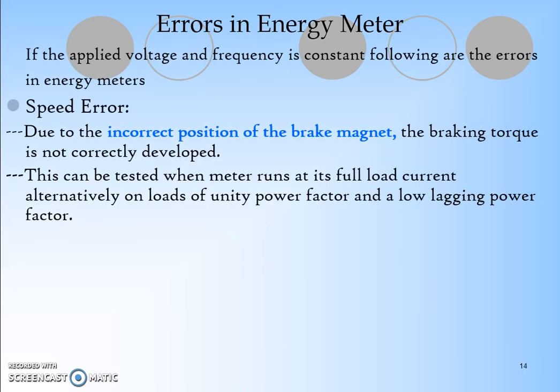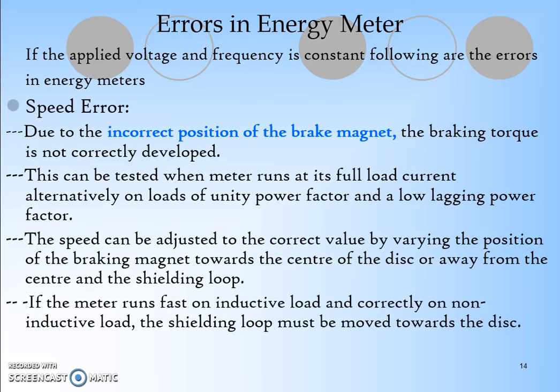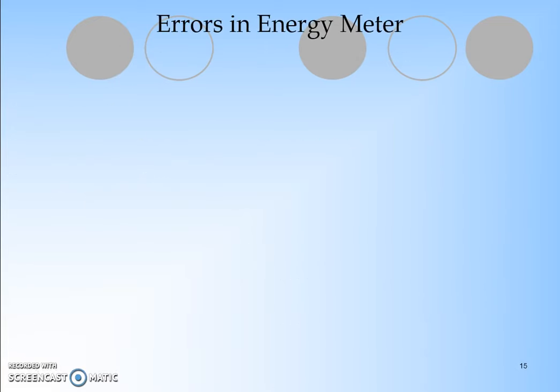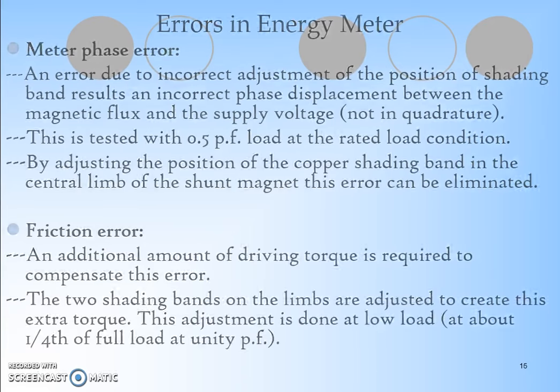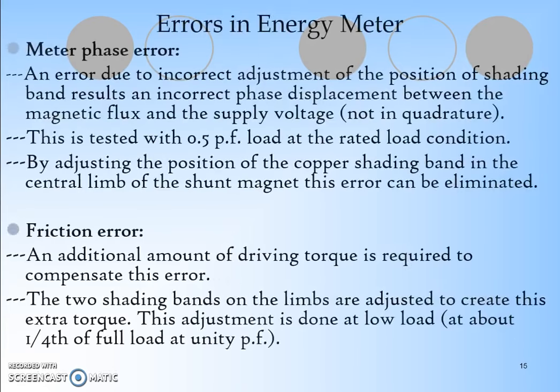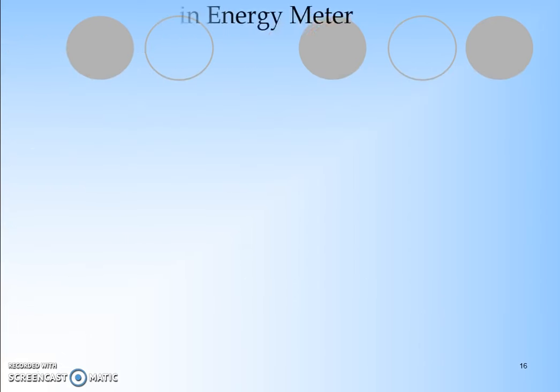There are different errors in the energy meter. One is the speed error. Sometimes in analog energy meters people complain the disc is rotating faster, so the bill may be higher, or sometimes the disc won't rotate accurately and the bill may be less. These errors are the main cause because of the brake magnets. This can be reduced by arranging or adjusting the brake magnets. Then we have meter phase errors and friction errors based on the amount of weight we add.